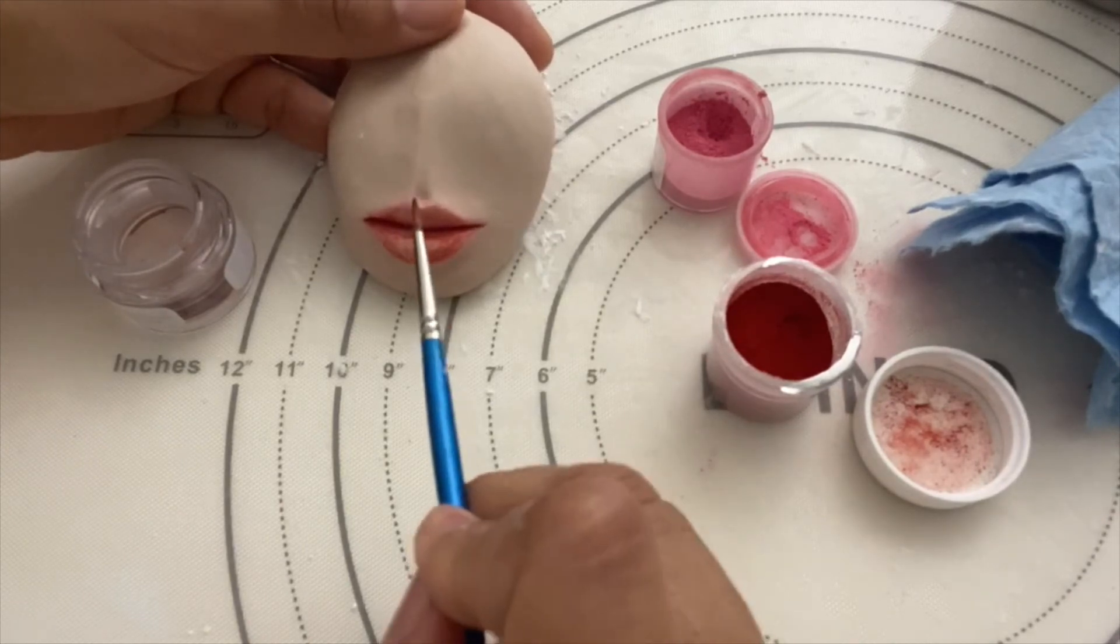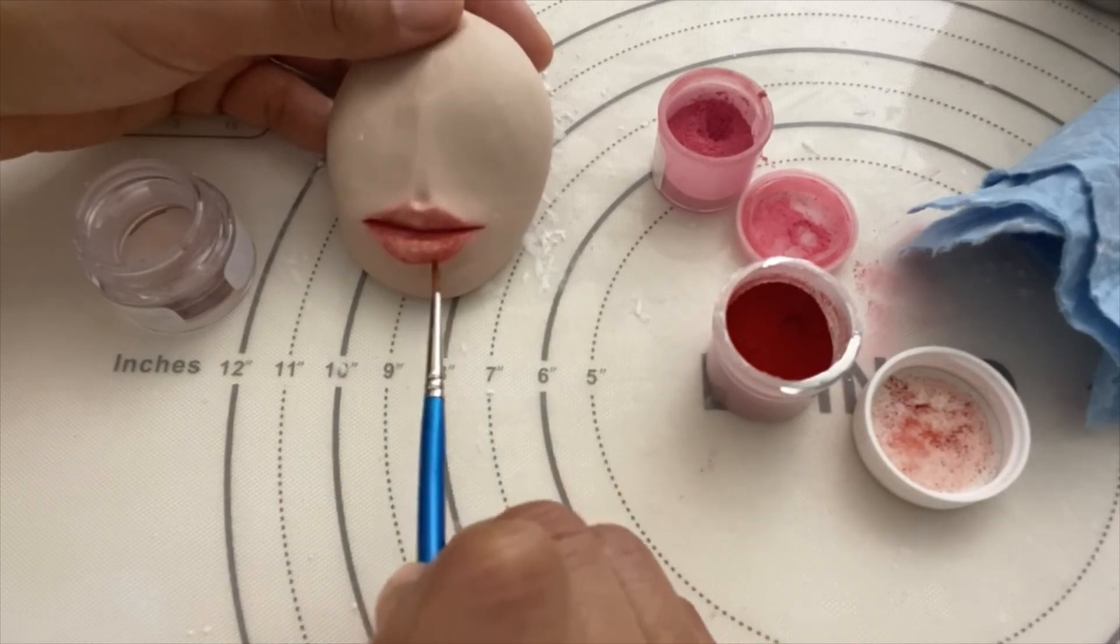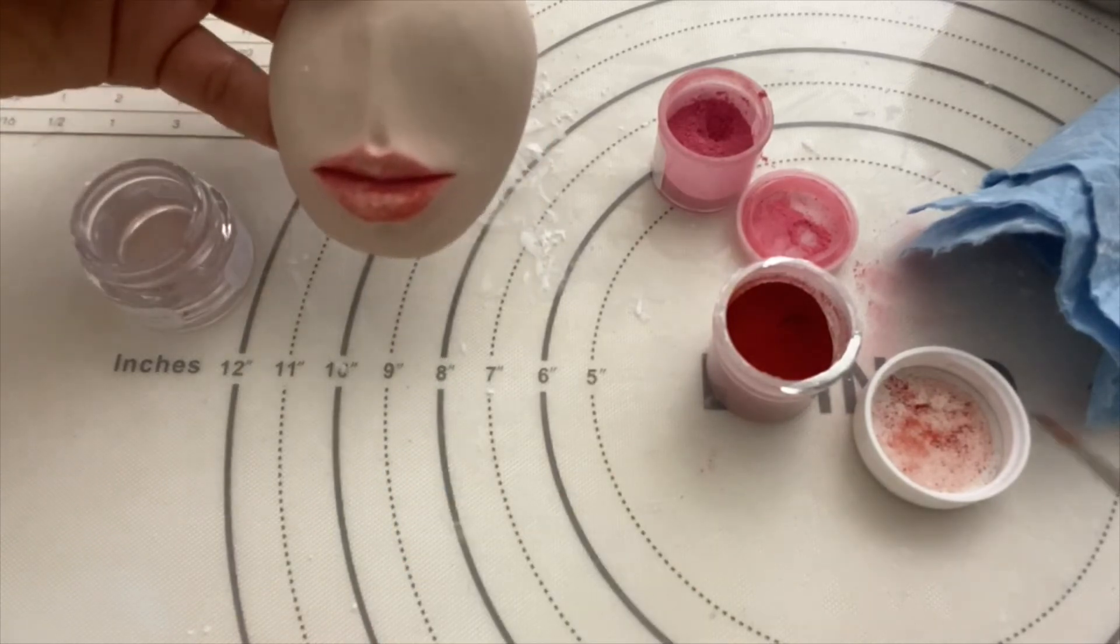If there's too much corn syrup it might dry a little sticky, but otherwise once it's fully dry you should be able to touch it. And there you have your lips.